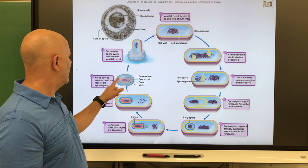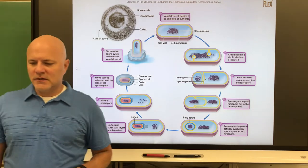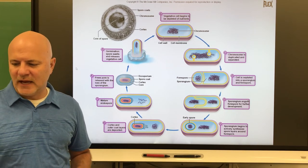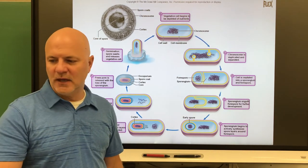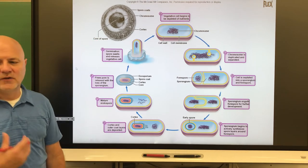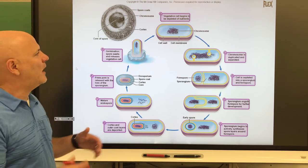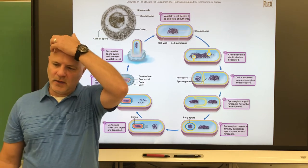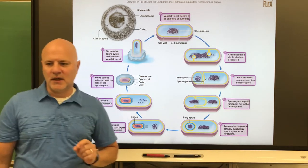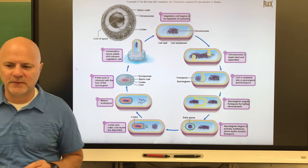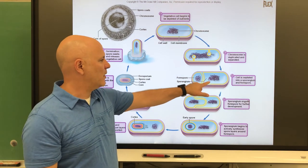The vegetative cell is the metabolically active, growing form. It can be environmentally induced — for example by nutrient depletion — to produce an endospore through a process called sporulation. The cell first duplicates its chromosome, then separates into a forespore and a sporangium. The forespore will become the endospore, while the sporangium creates the layers around it.